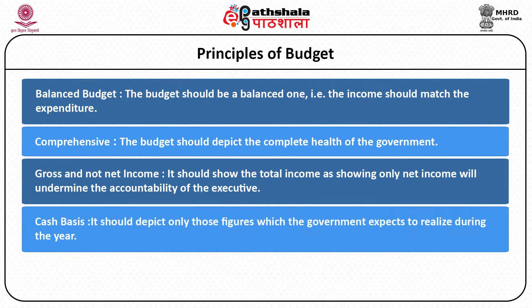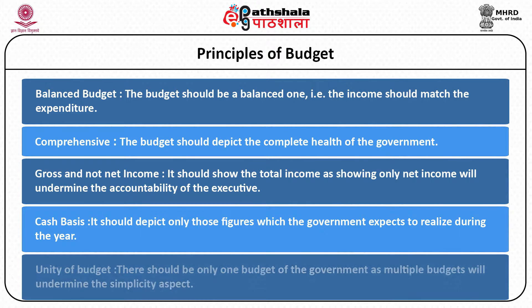Then, budget should be based on cash basis, that is, it should show only those figures which are going to be realized during the year. If it is not followed, there is a possibility that the department may find itself in difficulty. Further, there should be only one budget of the government, as multiple budgets will undermine the simplicity aspect. Budget is primarily made for the consumption of the legislature and the common man, both of whom are non-technical people, and multiplicity of budgets will add to their problems and confusions.